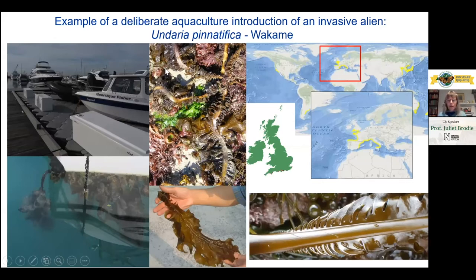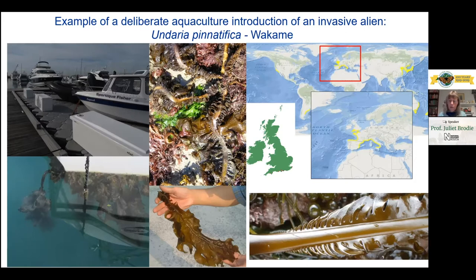Probably the worst alien we have in Britain - and we've worked with Helen Roy on this - is Undaria, wakame. It's a bit of a thug. You can see it here growing on the hulls of boats in marinas, and you have it on the Isle of Wight, where it's spreading and now on the shore. Go to somewhere like Poole Harbour and it's very common in the shallow water - that's probably one of our most worrying aliens in Britain. But again, you can eat it and it's supposed to be very good for you, so maybe we just have to learn to love it and learn to use it.